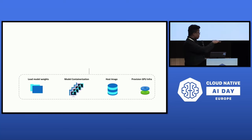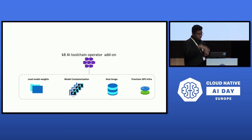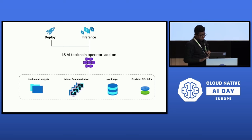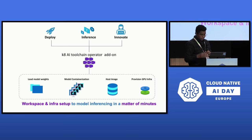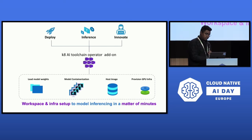At the core, you have your model weights, model containers, hosting weights, and provisioning infrastructure. KAITO sits in between — it allows you to deploy your model, run inference, and train your model. Your entire workspace setup for model inferencing is done in a matter of minutes instead of the weeks it used to take.